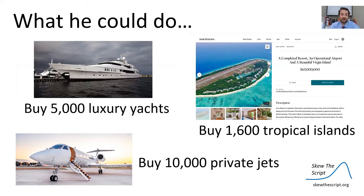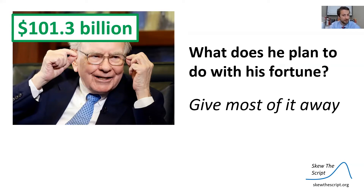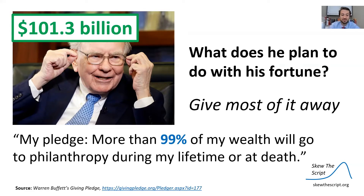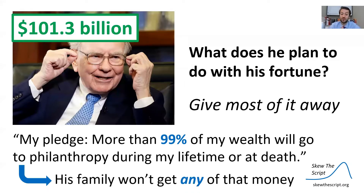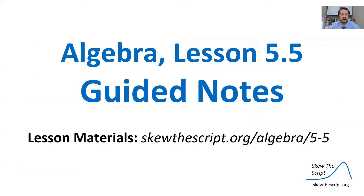He could buy 5,000 luxury yachts, 1,600 tropical islands, or 10,000 private jets — all those sound pretty tempting. But what does he actually plan to do? Give most of it away. Warren has said that his pledge is that more than 99% of his wealth goes to philanthropy during his lifetime or at his death. His family won't get any of that money. This might be a little surprising, but that's exactly today's key analysis: why would Warren Buffett give away most of his wealth? If you'd like to follow along, check out the link below and download or print out the guided notes.